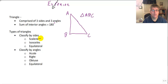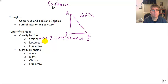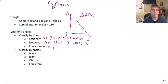A scalene triangle, classified by sides, has no two sides that are the same or congruent. An isosceles triangle has at least two sides that are congruent. And in an equilateral triangle, all sides are congruent. So an equilateral triangle is also isosceles.